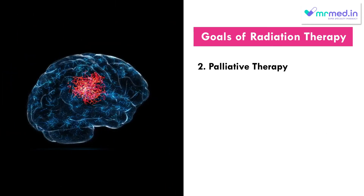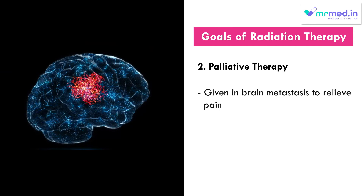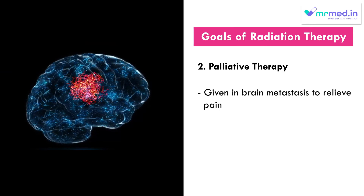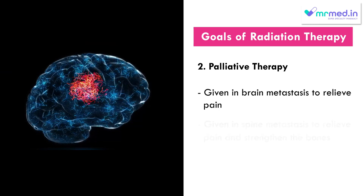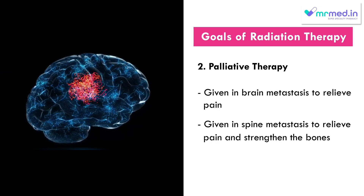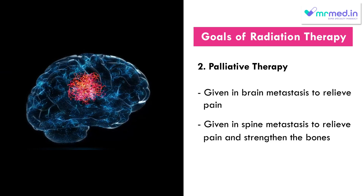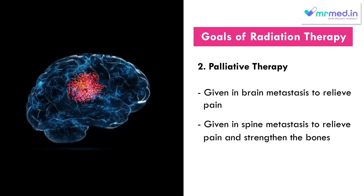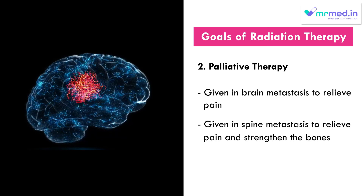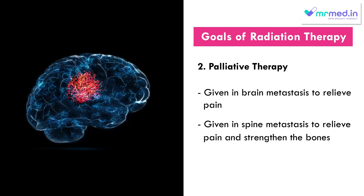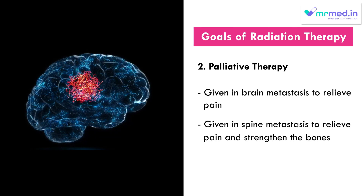And in palliative settings, for example brain metastasis, we give palliative radiotherapy; or spine mets where there is pain or the bones are on the verge of fracture — we try to give radiation to strengthen the bones. So these are the two different intents of delivering radiotherapy.